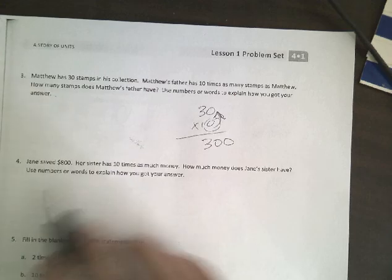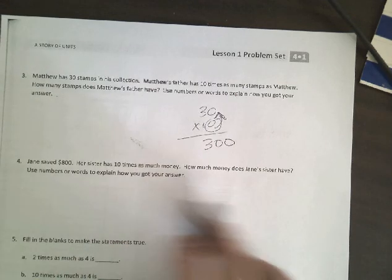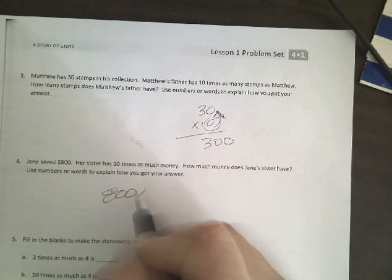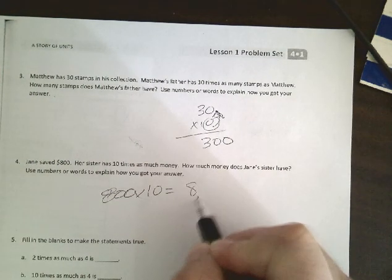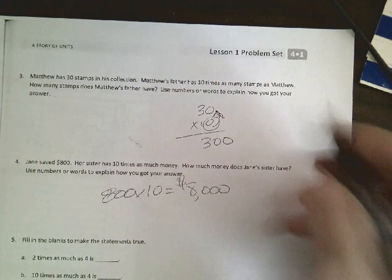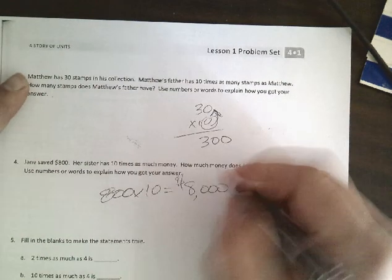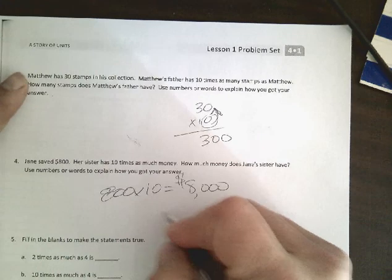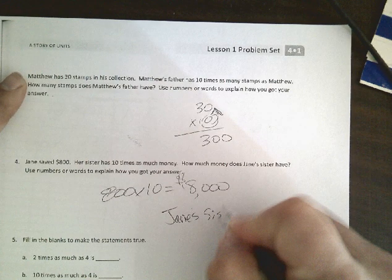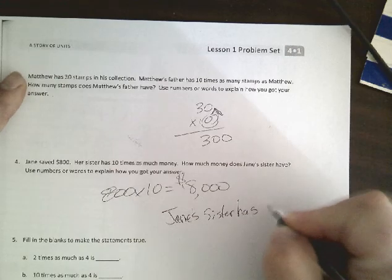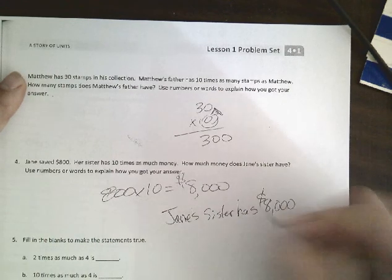Jane saved $800. Her sister has 10 times as much money. How much money does her sister have? So that is 800 times 10, that would be $8,000. I told the students today also that when we're doing these word problems, I would like these answers in sentence form, so I would have Jane's sister has $8,000.